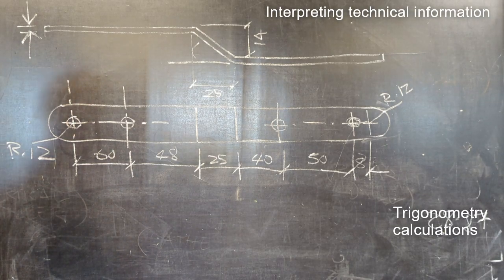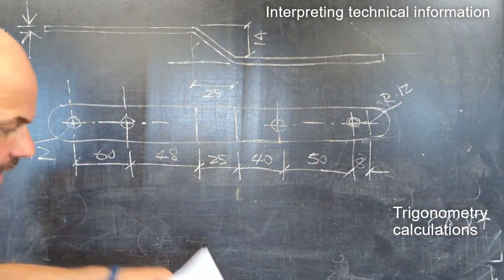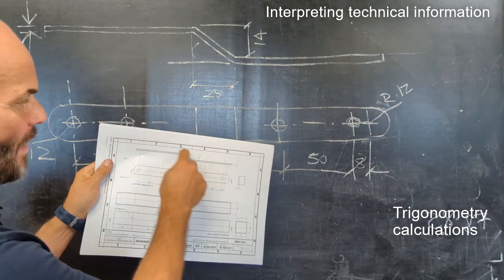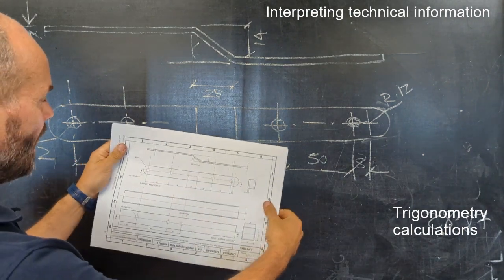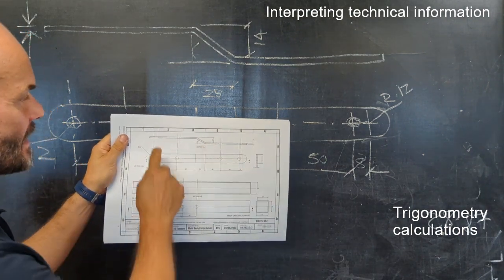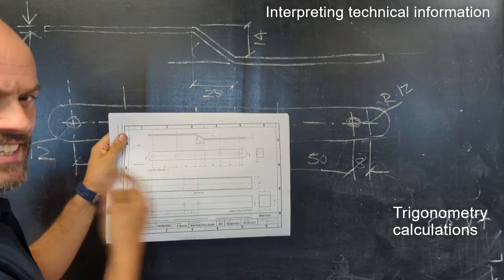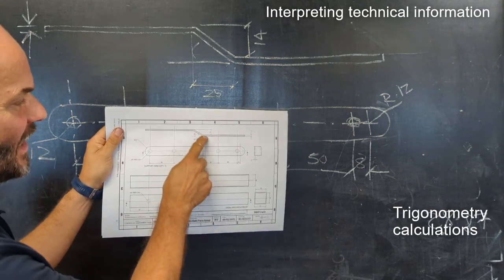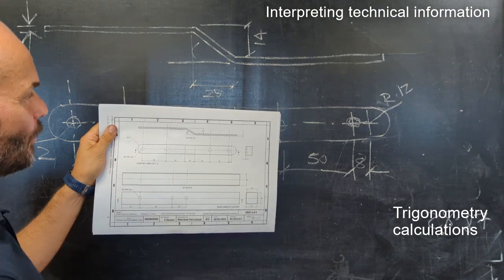What we've got to do in engineering is interpreting information and looking at the cranked or bent support arm for the bike stand. There's a dimension that's missing, so it gets you thinking about how you're going to find out what the true length of this diagonal piece is.